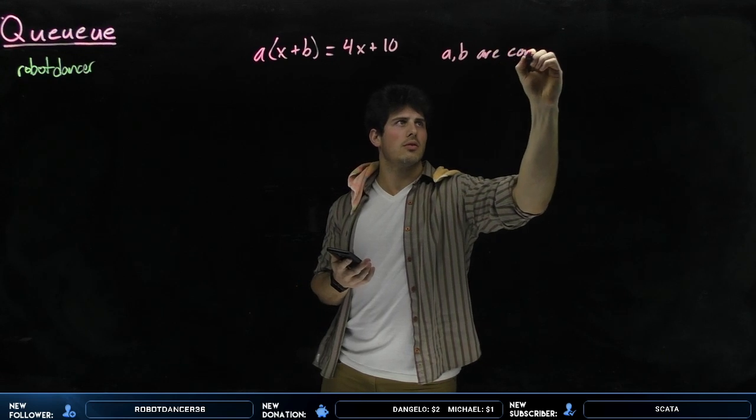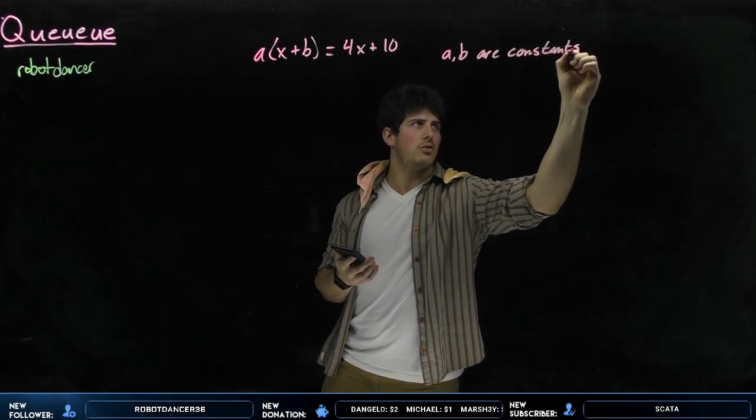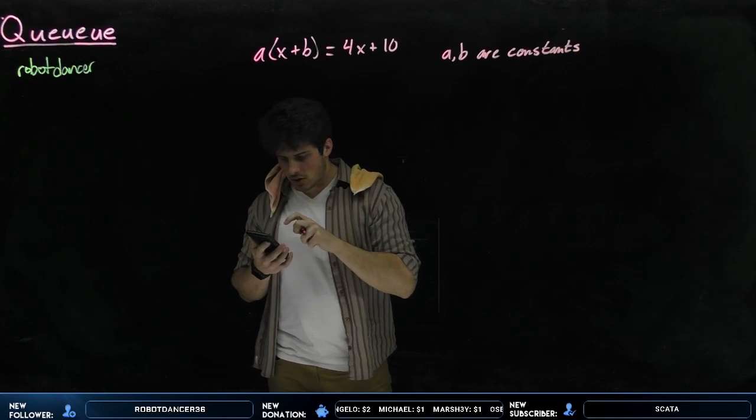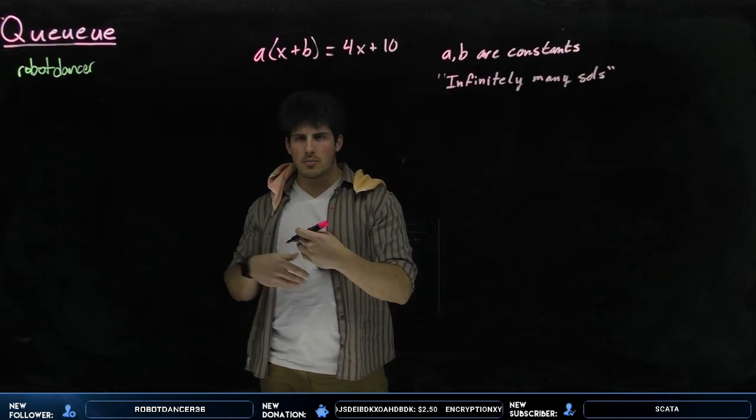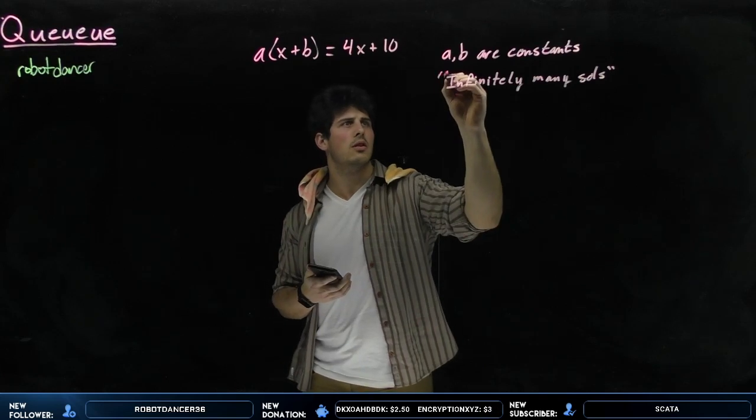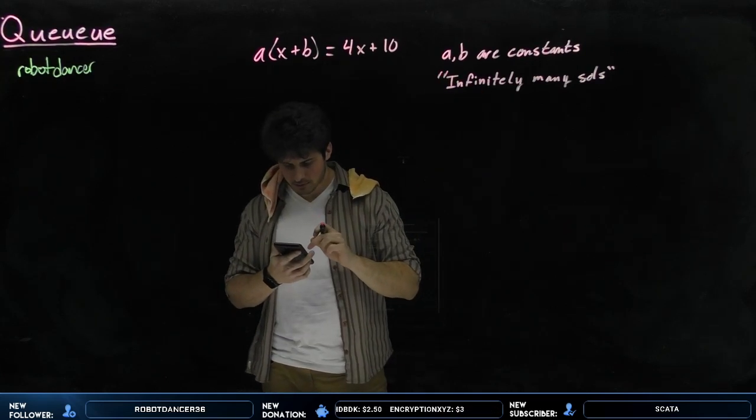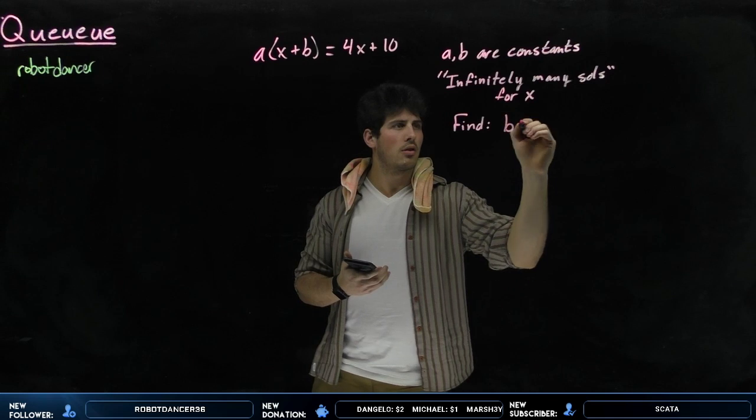That's important. Their values will not change. And the equation has infinitely many solutions. That is very important to this. For x, find b.